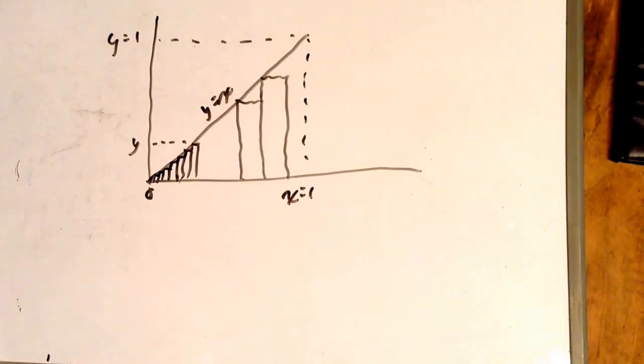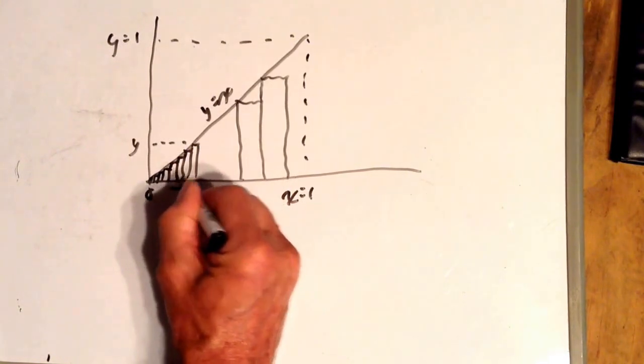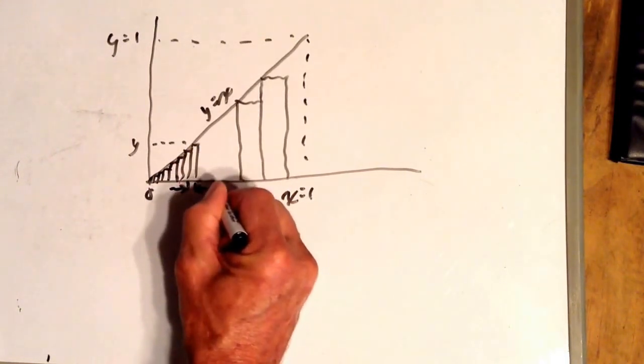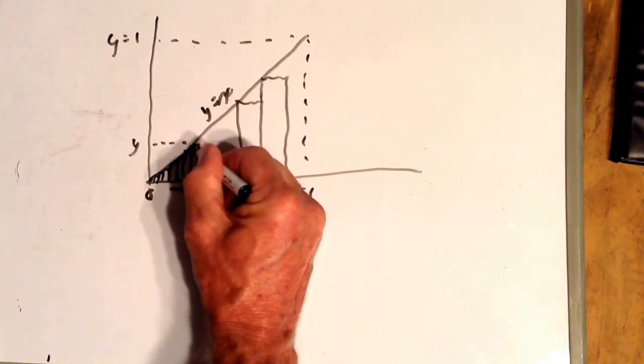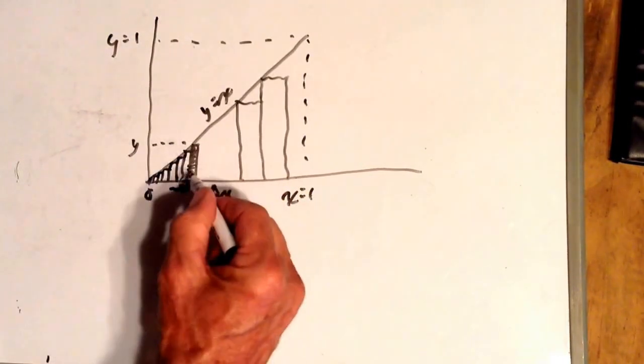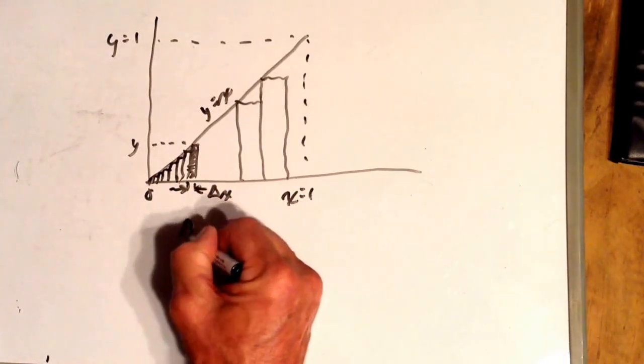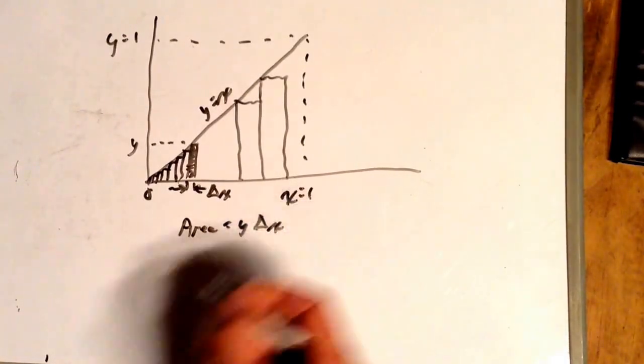The width of each rectangle, from there to there, we're going to call that delta x. We use the Greek letter delta to mean change of. So the area of each rectangle is y delta x. The area of this rectangle right here, it's y high. It's delta x wide, so its area equals y times delta x.